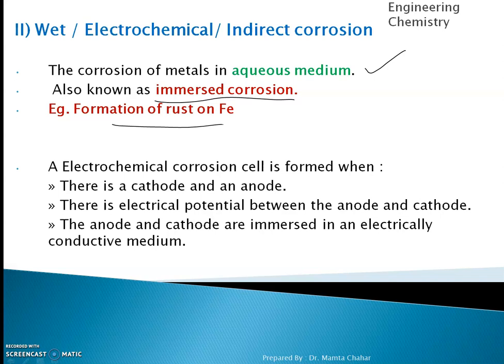The conditions require a cathode and an anode, and the cathode and anode should differ in electrode potential. We look at the electrochemical series to determine this.